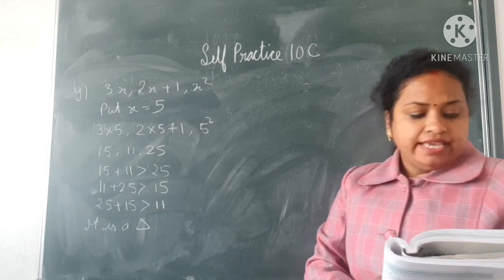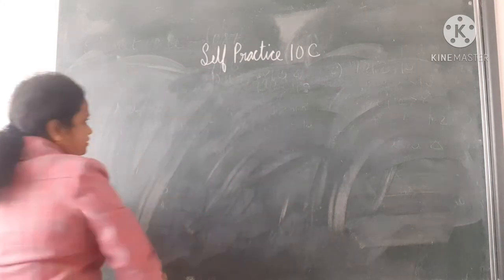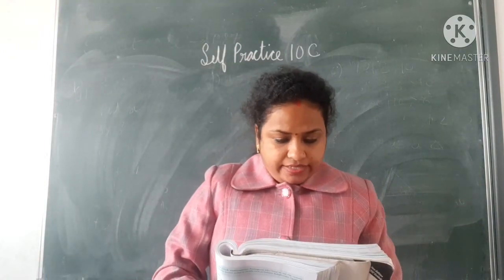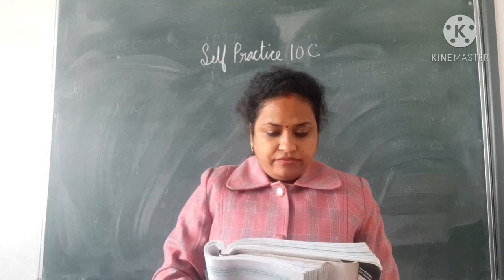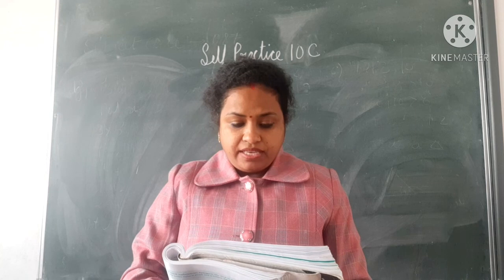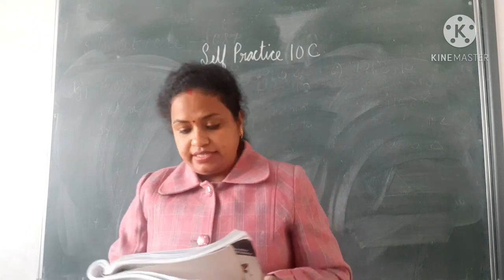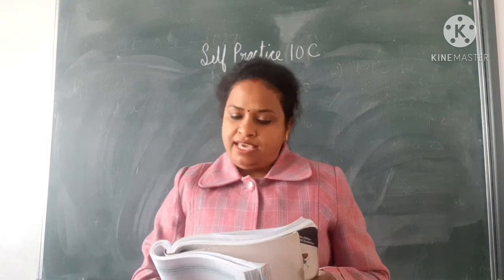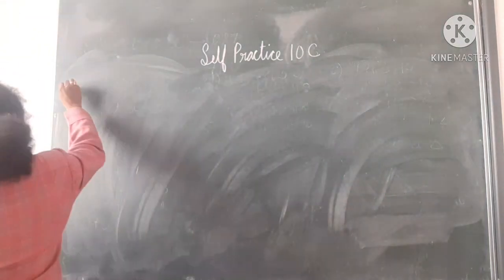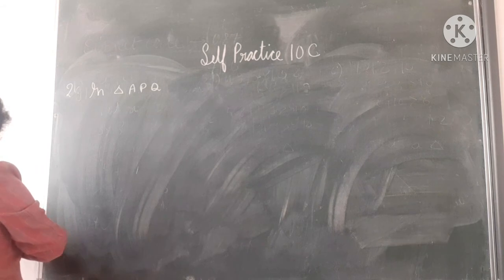Now, A is any point within a triangle PQR, where AP, AQ, and AR are 5, 7, and 10 cm respectively. Show that AP plus AQ plus AR is greater than 11 cm. So you should take at least three triangles. In triangle APQ...